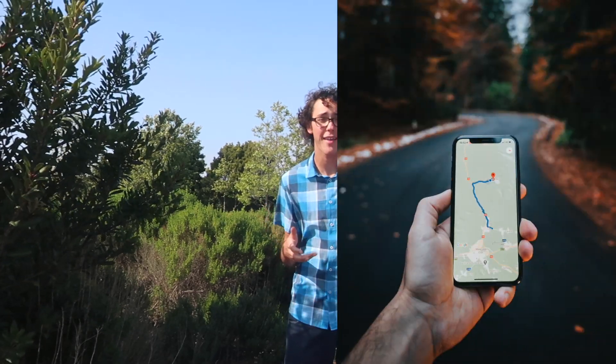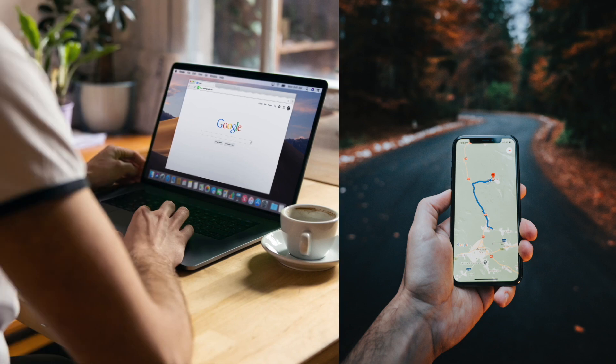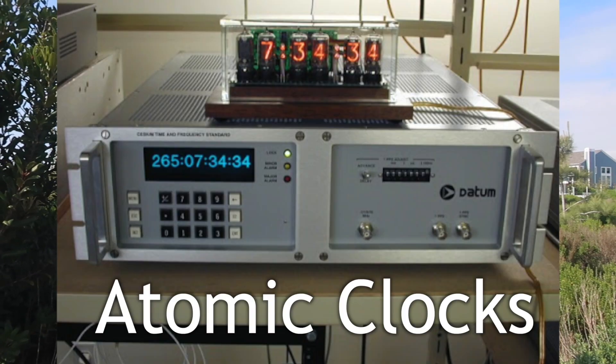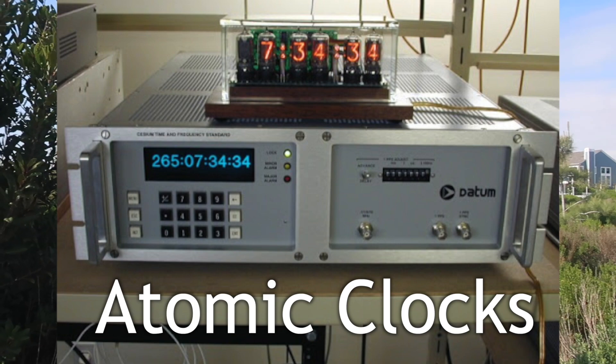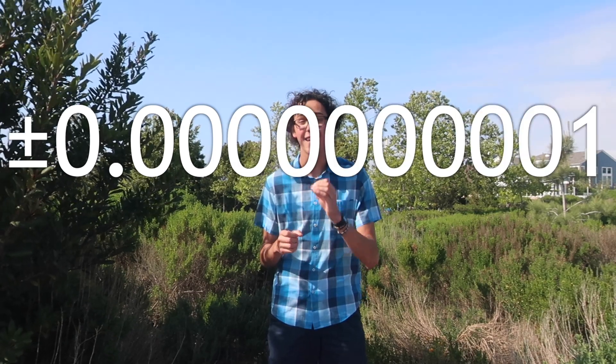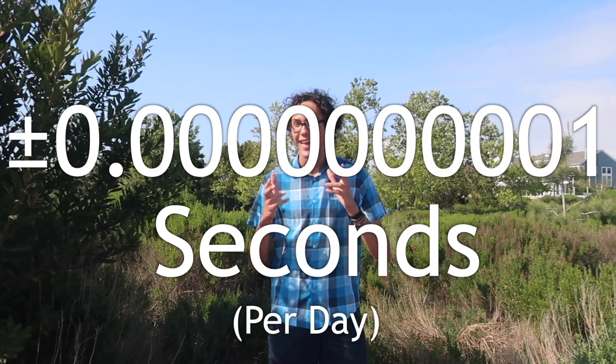For example, things like GPS and the internet rely on extremely accurate clocks. So how do they get that accuracy? Well, they use something called atomic clocks. Now atomic clocks are so accurate they only lose or gain less than a tenth of a nanosecond per day. That's 0.00000000001 seconds. And atomic clocks are the focus of my next video, so make sure to stay tuned for that.